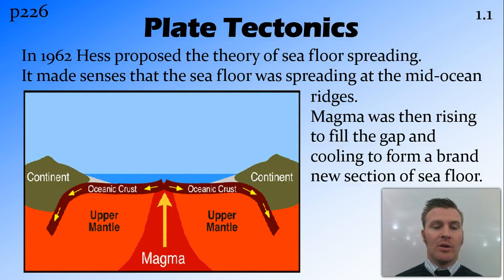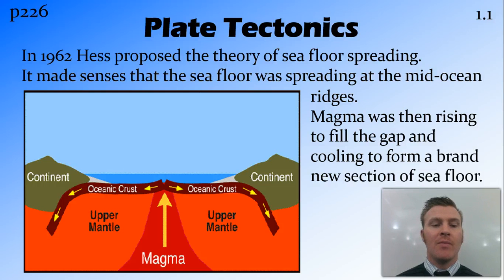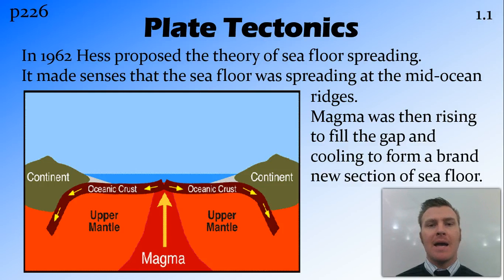What he proposed was that there was a hot spot where magma was rising at the mid-ocean ridge, that the sea floor was being created at that point, moved out away from the ridge, and then was being destroyed once it reached the continent.